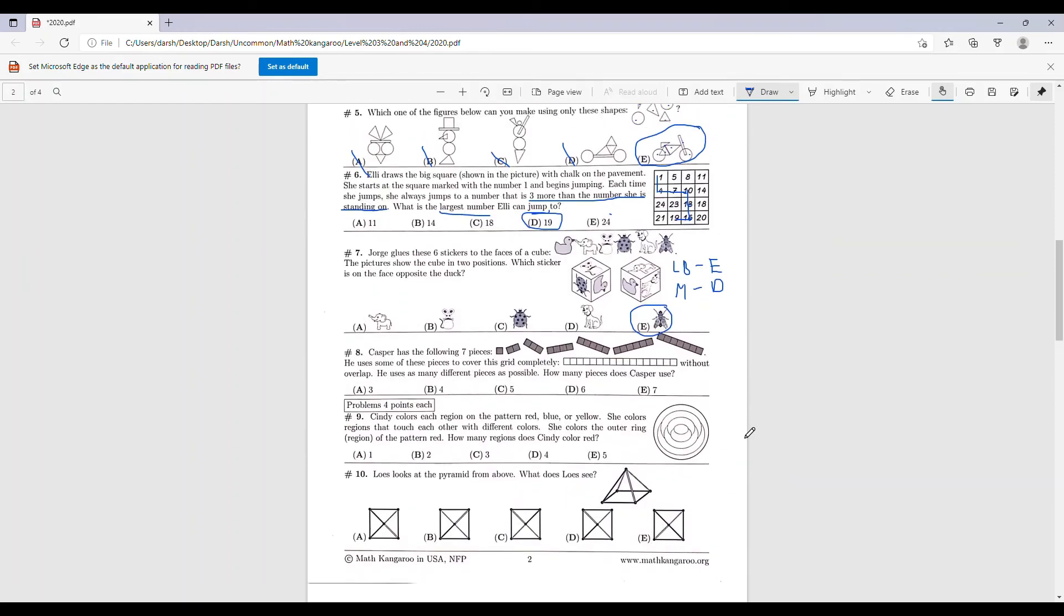Number eight. Casper has the following seven pieces. Let me see this. He uses some of the pieces to cover this grid completely, without overlap. He uses as many different pieces as possible. How many pieces did Casper use? So we see we have the one piece here, then we have the two piece here, then we have the three piece here. Then let's try the four piece.